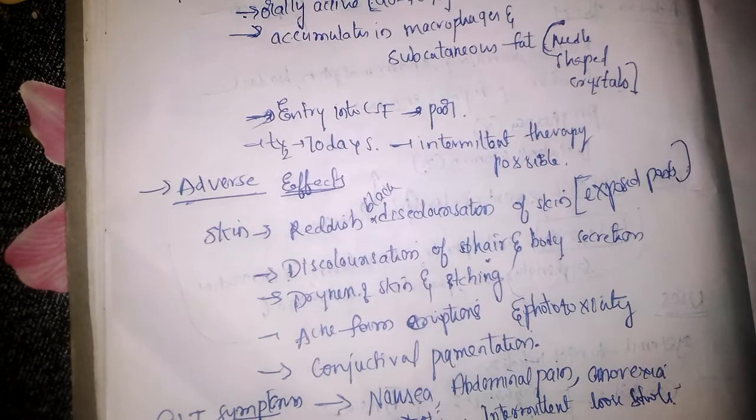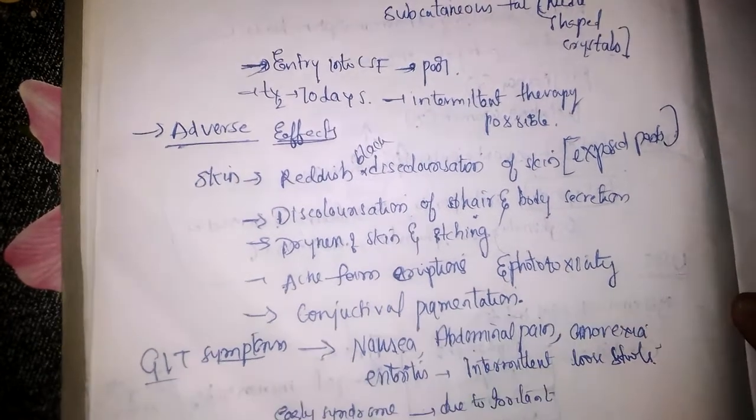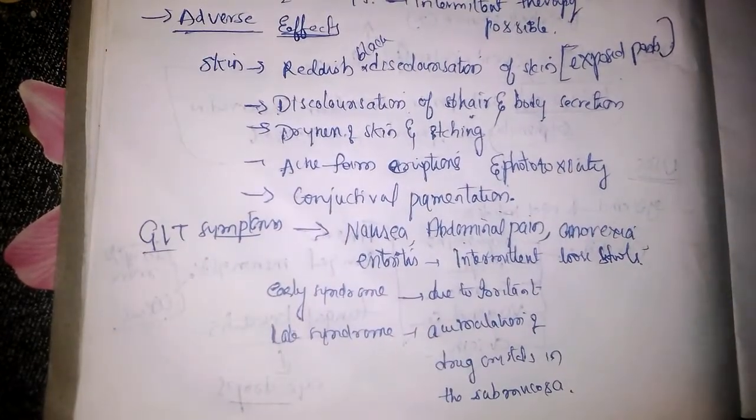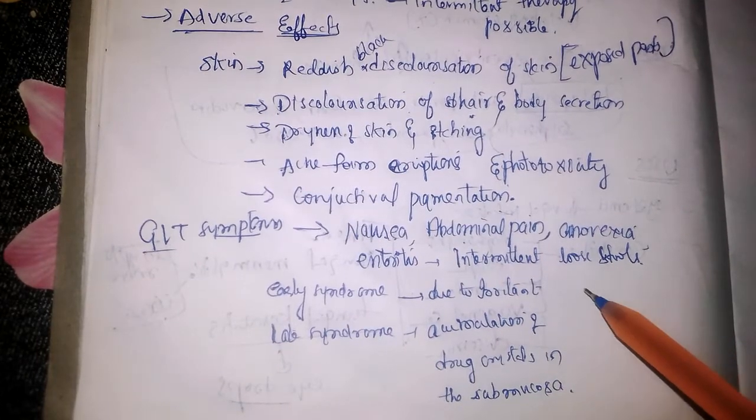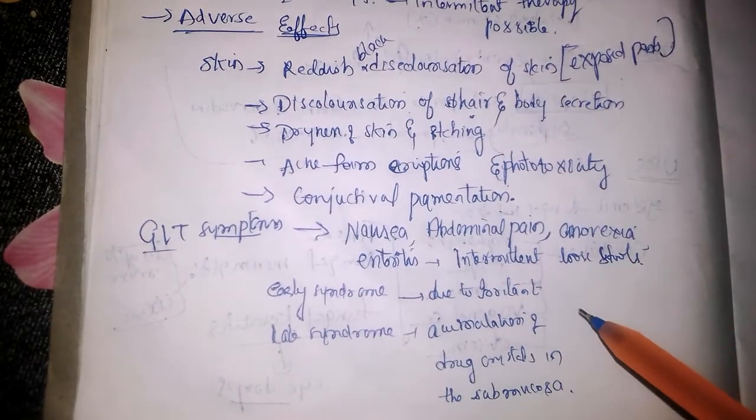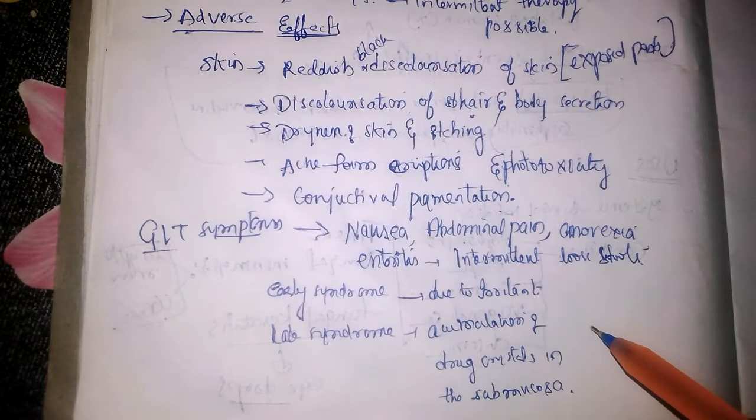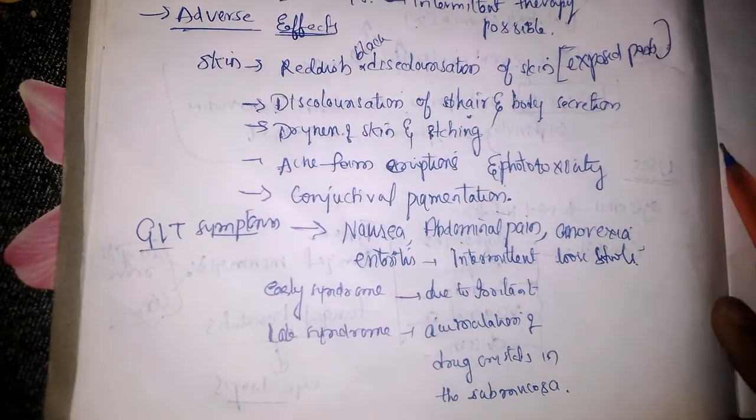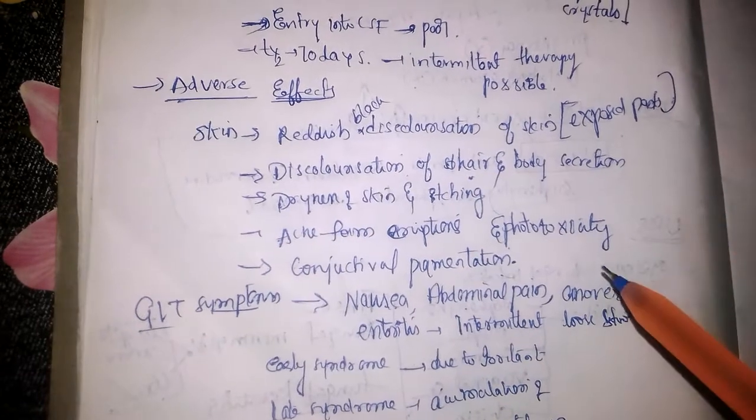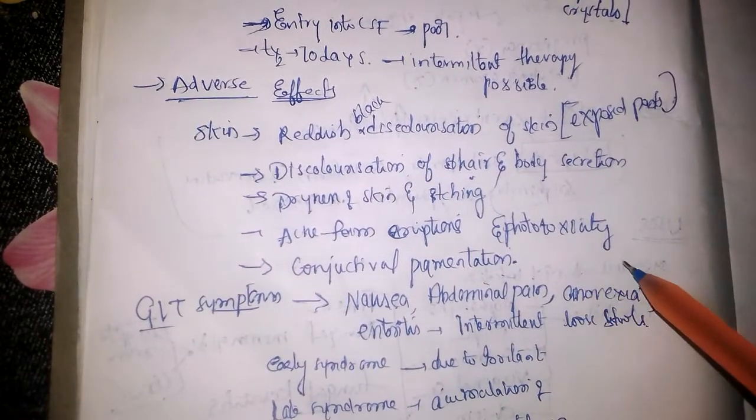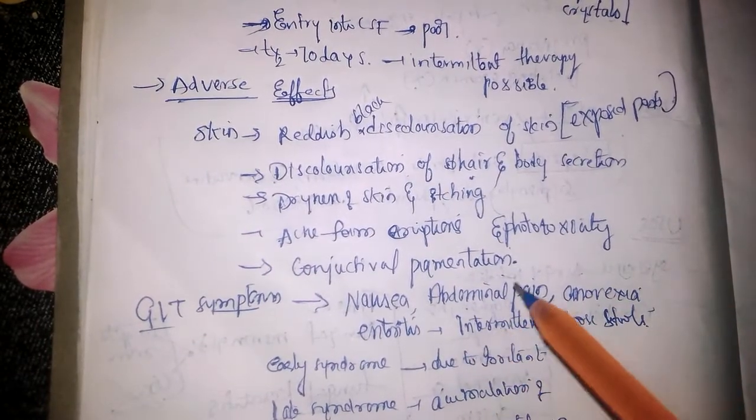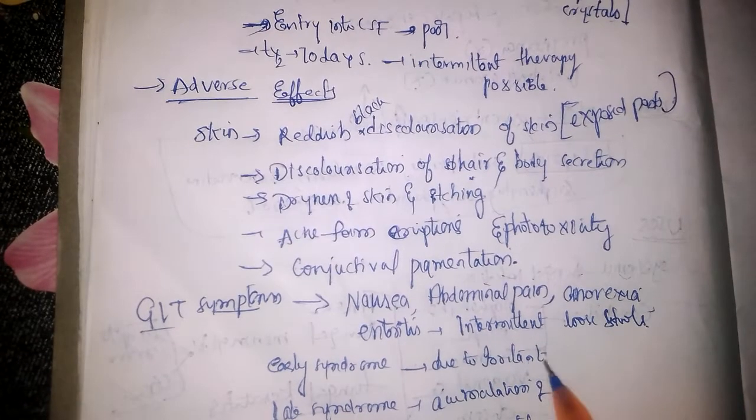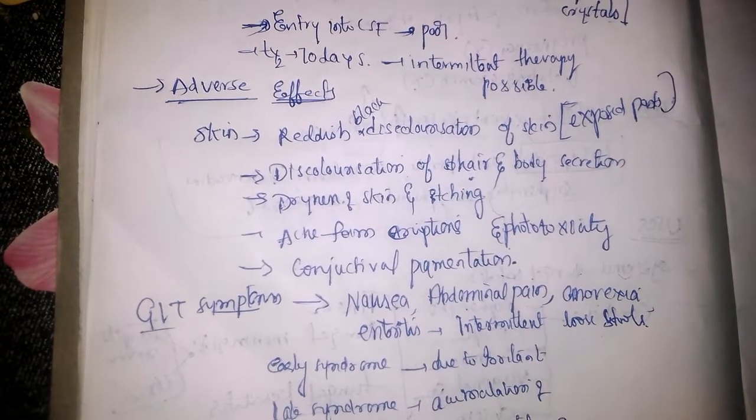Coming to GIT symptoms, early symptoms are mainly due to the irritant effect of Clofazimine, while late symptoms are due to accumulation in the submucosa of the GIT. Symptoms usually include nausea, abdominal pain, anorexia, and enteritis. Due to enteritis, there will be intermittent loose stools.